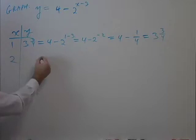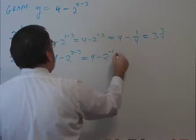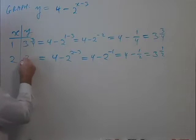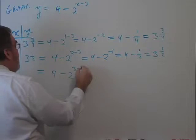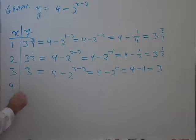If I go to 2, we're going to have 4 minus 2 to the 2 minus 3, which is 4 minus 2 to the negative 1. 4 minus 1 half is 3 and 1 half. So I'll go to 3. I've got 4 minus 2 to the 3 minus 3. That's 4 minus 2 to the 0. 2 to the 0 is 1. So my answer is 3.